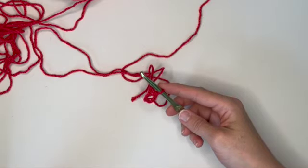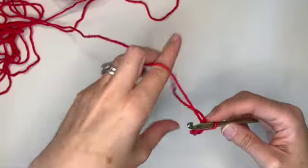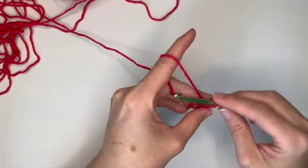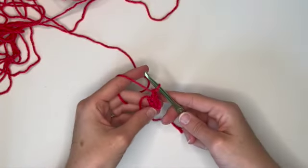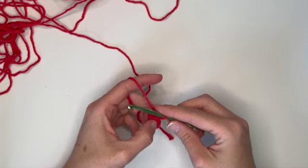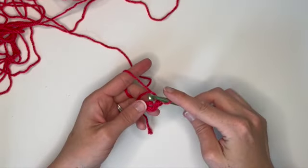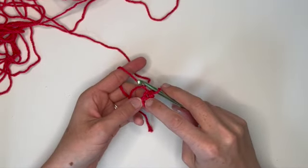All right, so it looks kind of like a circle. If you use your imagination it will look more like a circle when we're done with our first row. We're going to chain one.